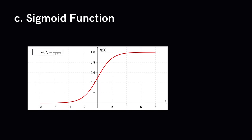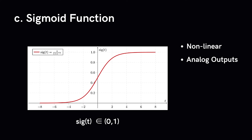Next, we have the sigmoid function, defined as a(x) = 1 / (1 + e^(−x)). It has non-linear nature, so combinations are also non-linear and we can stack layers. Unlike the step function, it outputs analog activations with a smooth gradient, and its output is bounded in the range 0 to 1 — so activations won't blow up. Sigmoid functions are one of the most widely used activation functions today.